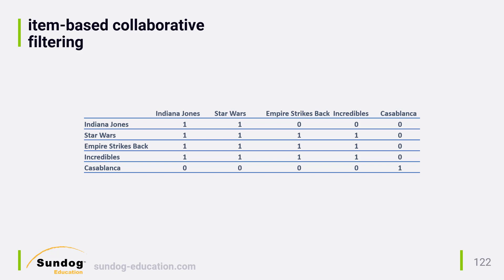You might also notice that we ended up with a larger matrix than when we looked at user similarities, but again, that's just a quirk of our example data. Normally you would have more users than items, not the other way around, and that would mean that your item similarity matrix will be smaller than a user similarity matrix would be.